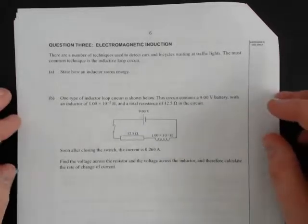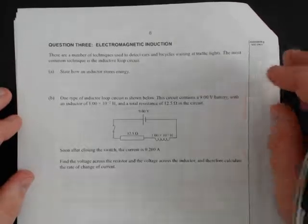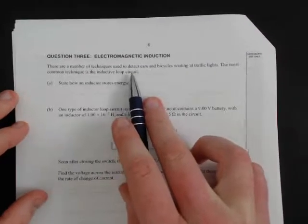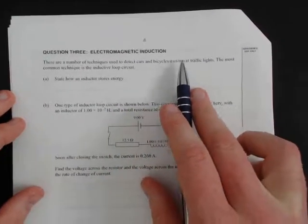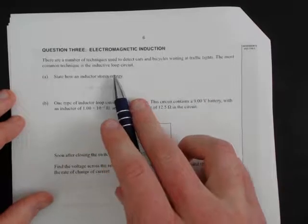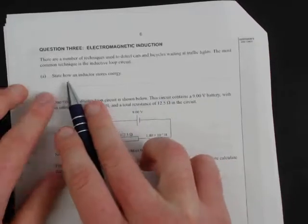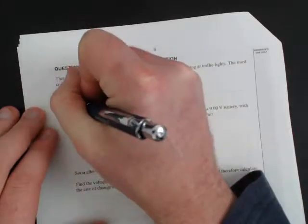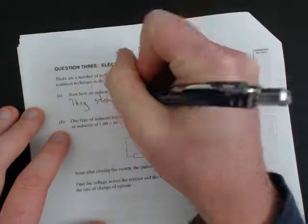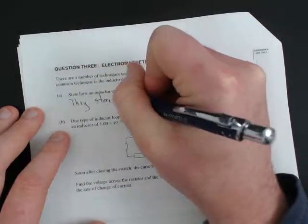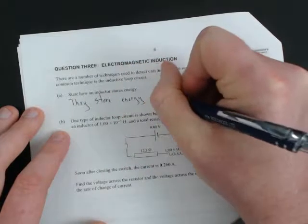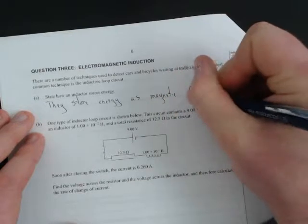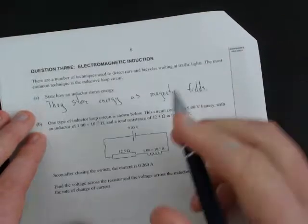This is question 3 of the 2015 electricity exam, NCA Level 3. There are a number of techniques used to detect cars and bicycles waiting at traffic lights. The most common technique is to use an inductive loop. Question A: state how an inductor stores energy. Inductors store energy as magnetic fields.